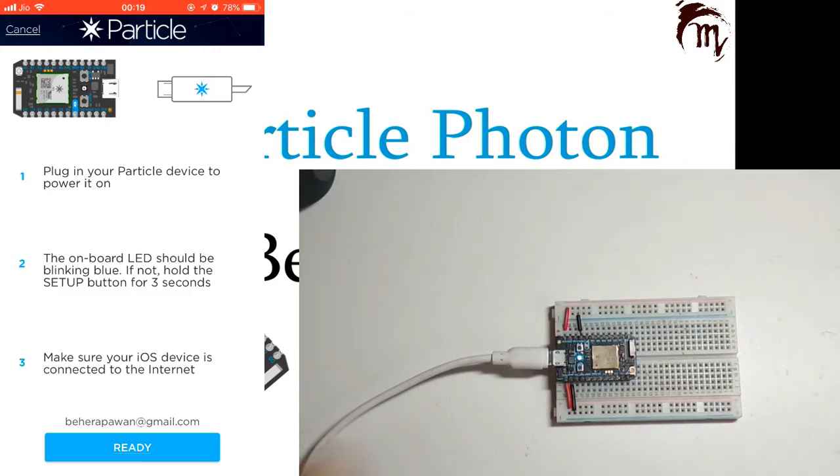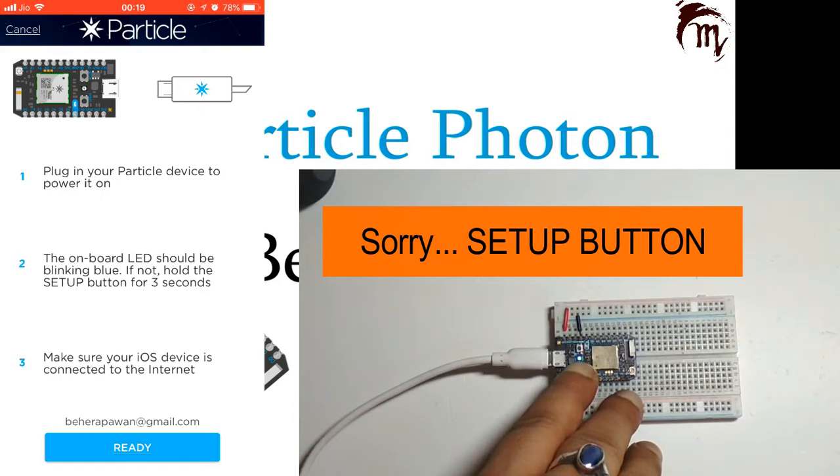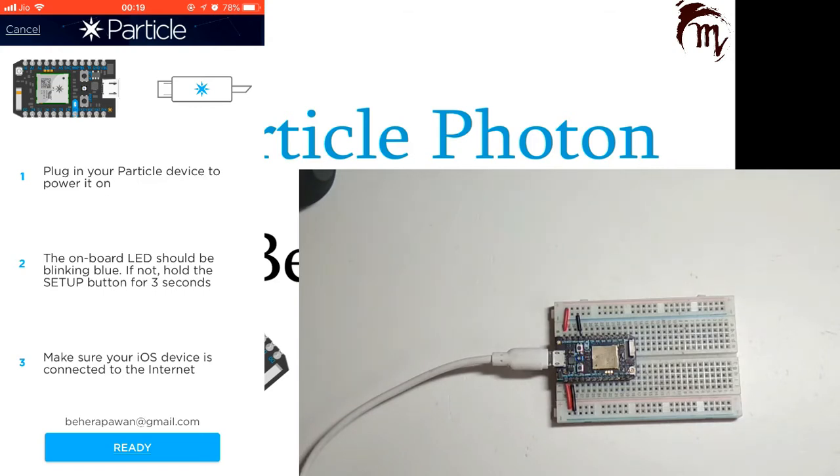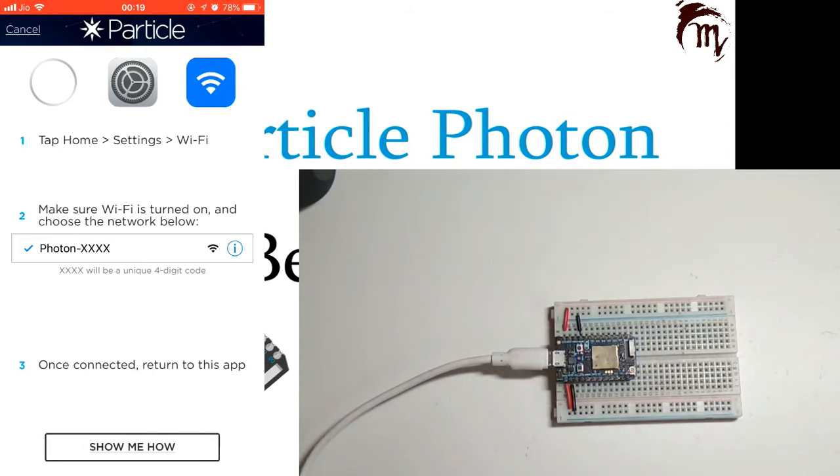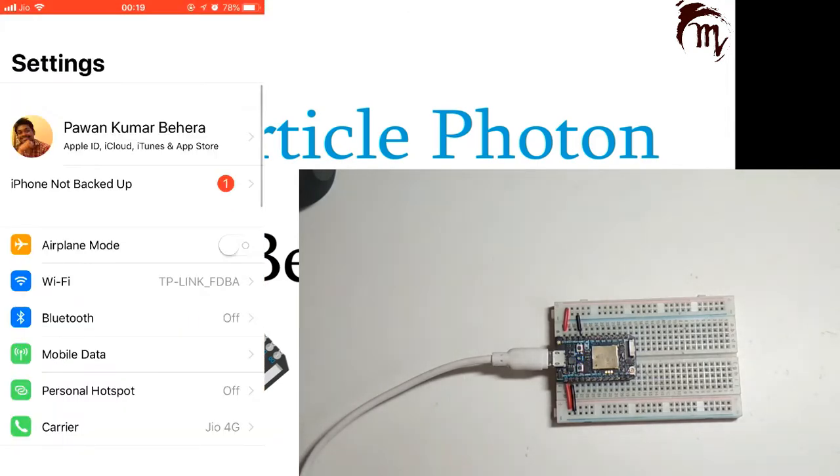I have zoomed in to my Particle board. Now it's powered up. To set the board to programming mode, you need to press this reset button for 3 seconds. When the board starts blinking blue, release it. Then in the app, click on Ready.